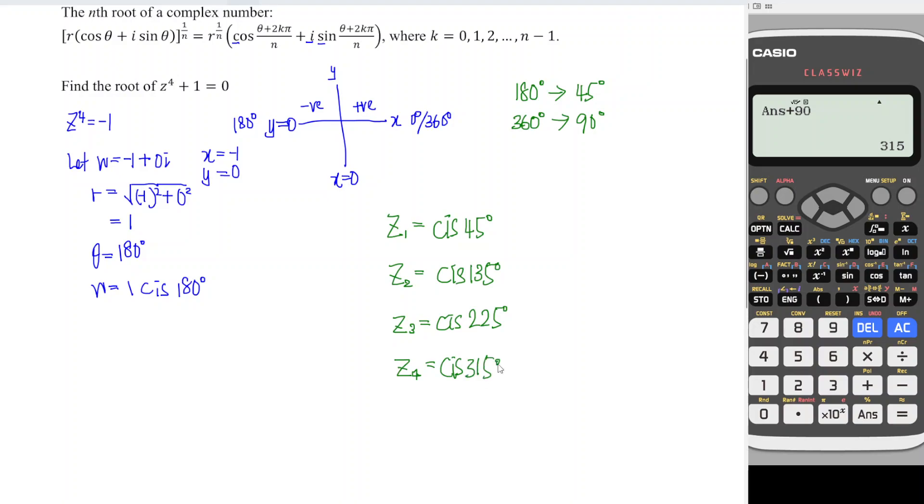If the question asks us to express the answer in rectangular form. So what we have to do, we just press calculator. So cos 45 degree is equal to square root 2 over 2. Or we want to write in approximate form. So we use decimal. We have 0.707. We round to the nearest three decimal places. Then we change cos to sine. We will obtain exactly the same value with positive value 0.707i.